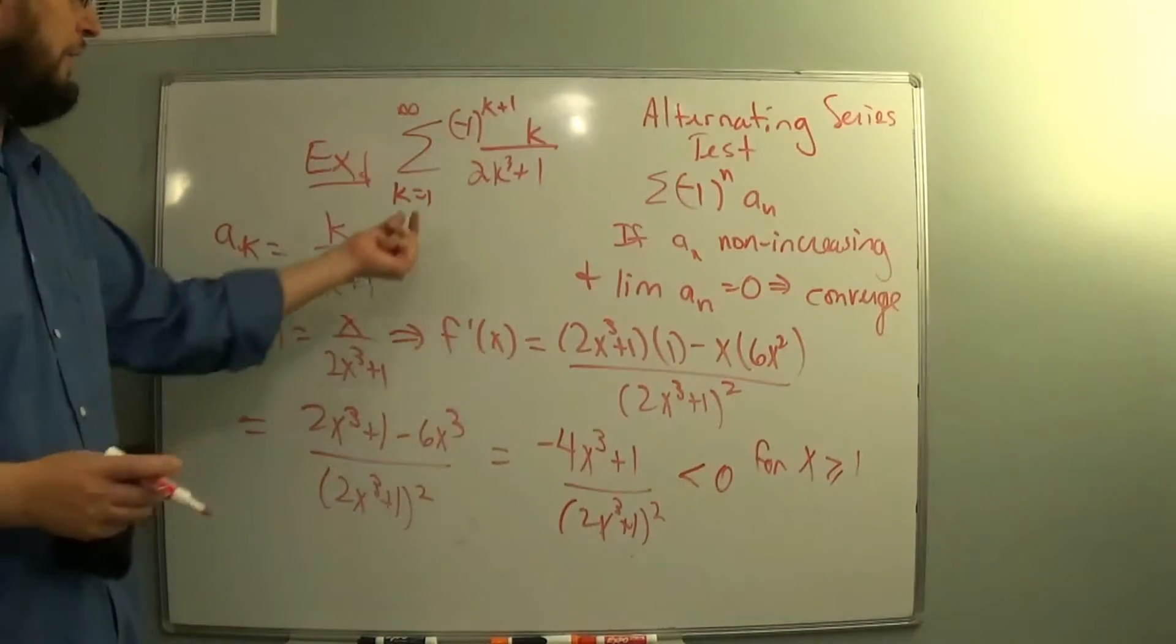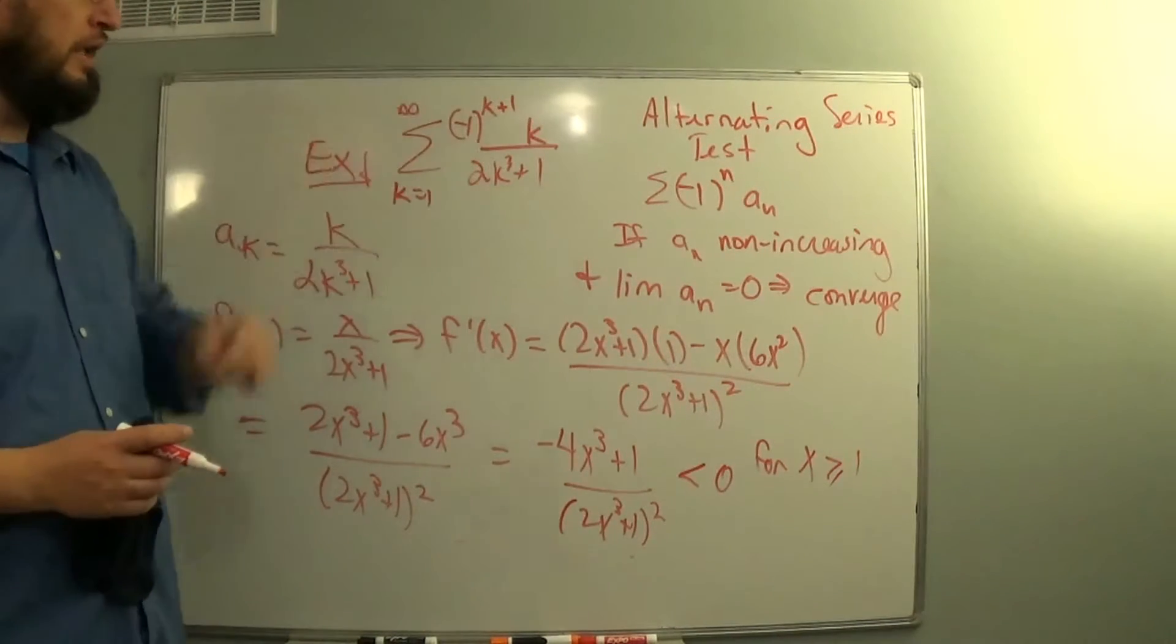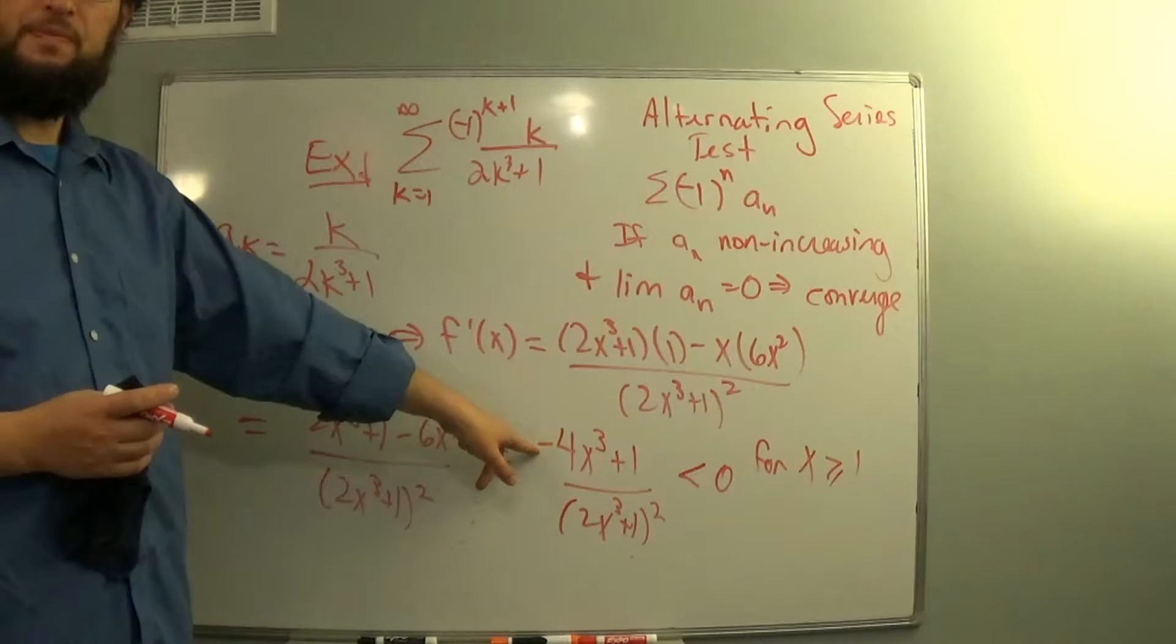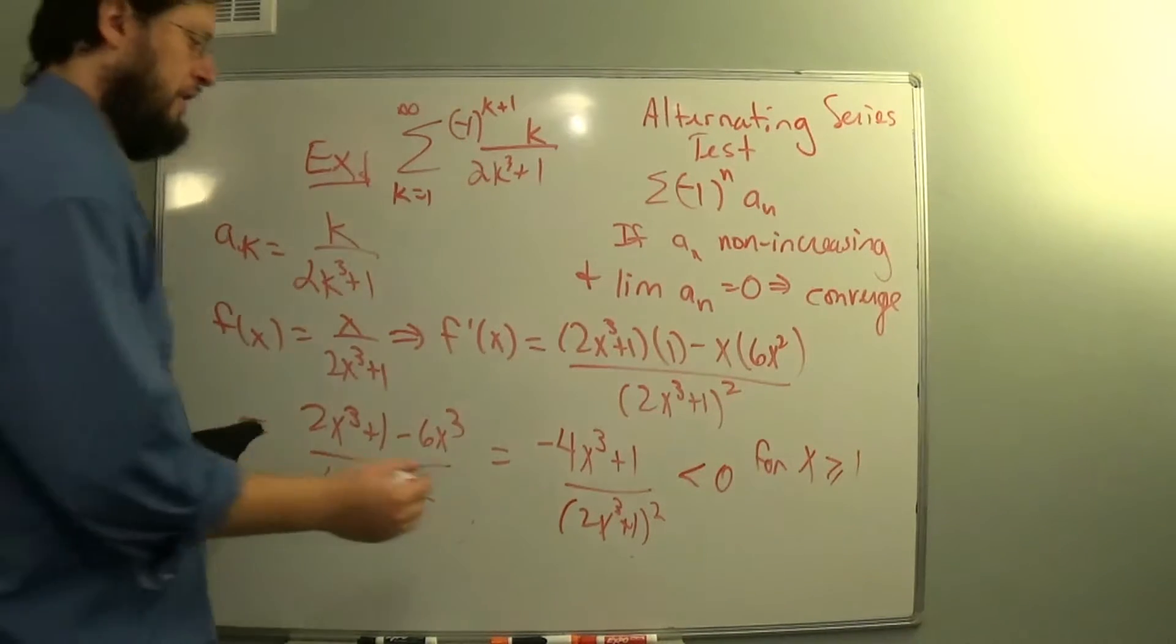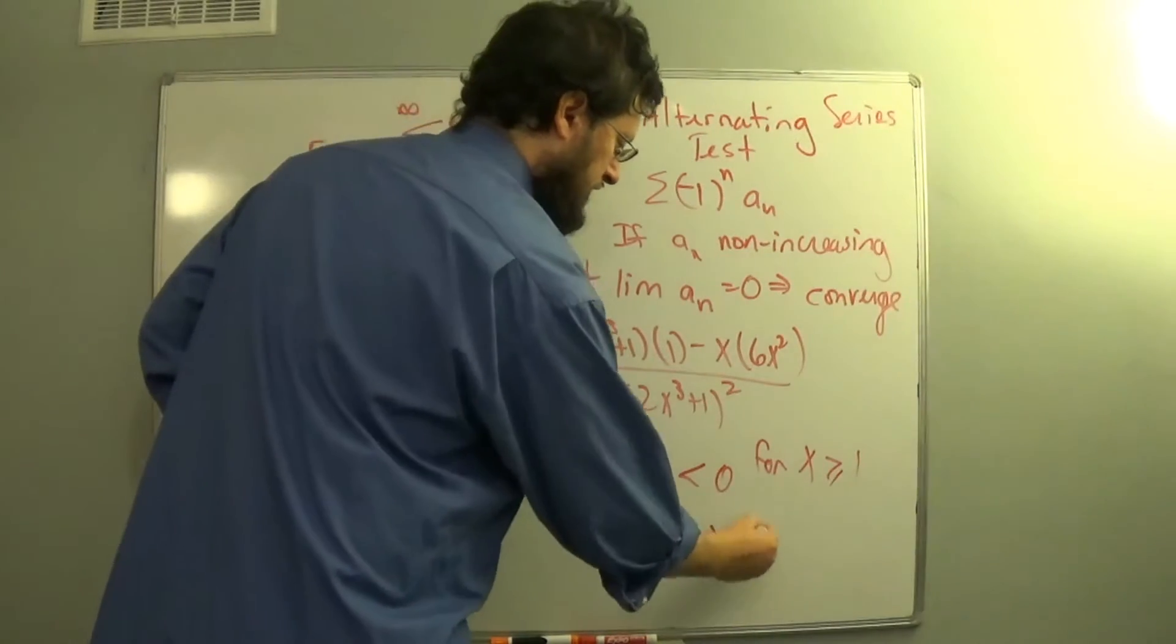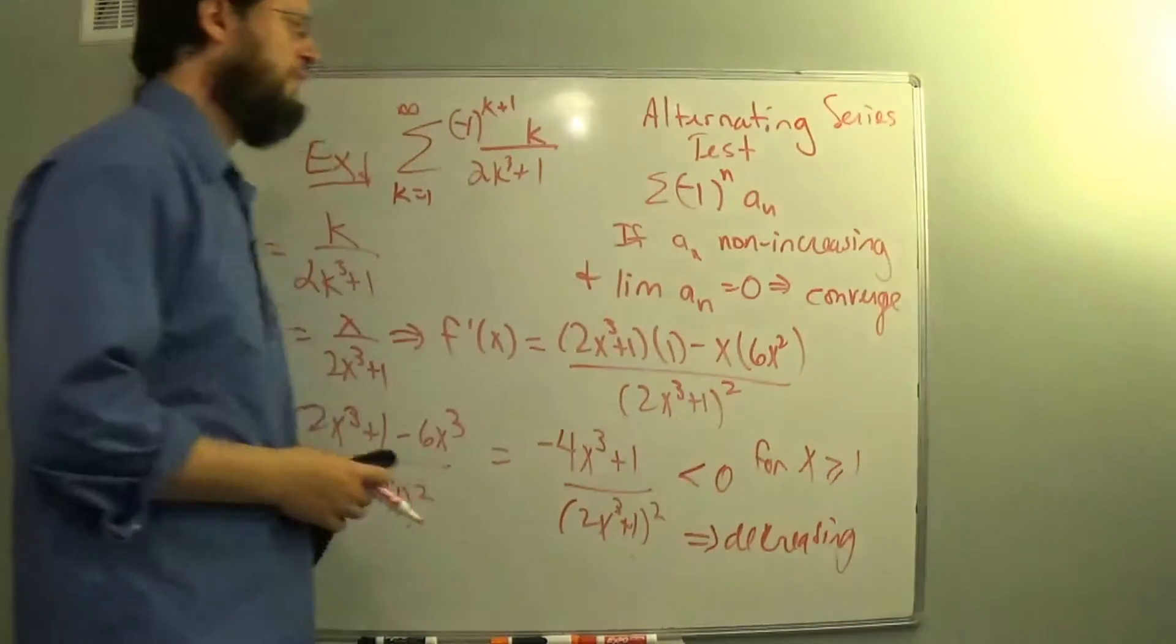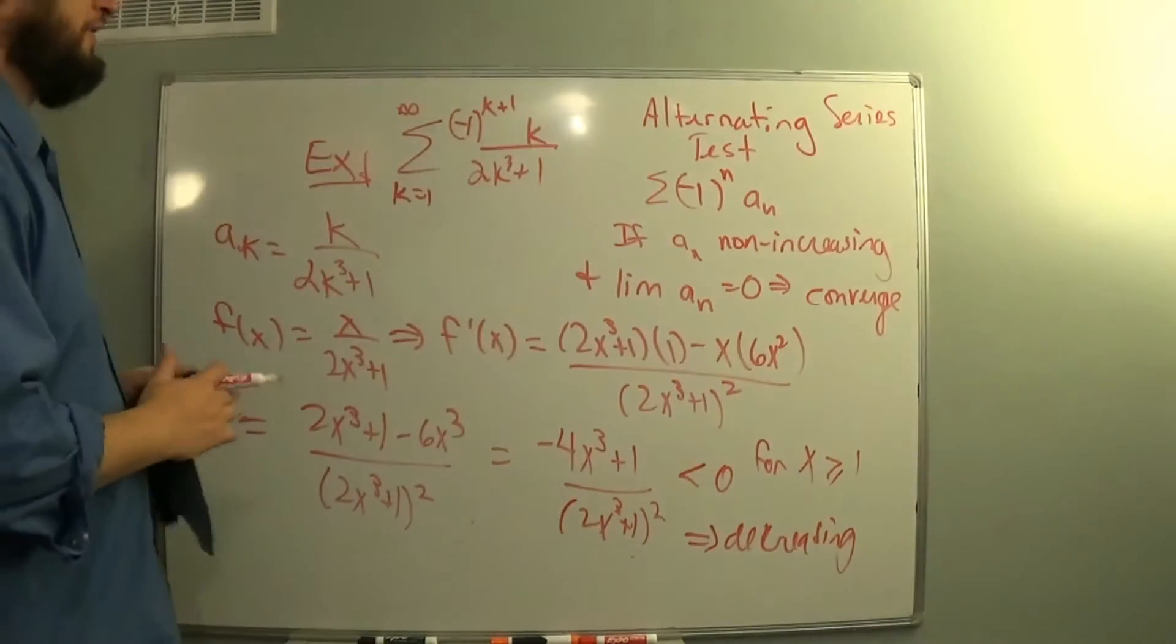And that's all I care about, x is equal to 1 and beyond. So this is always negative because of the negative 4 that's there, which means that this is decreasing. So the first requirement is satisfied.